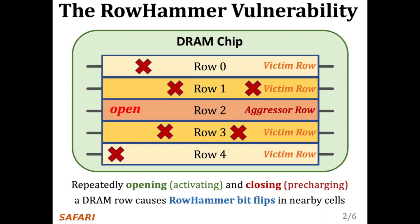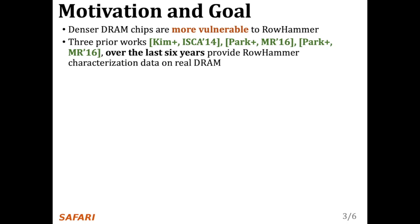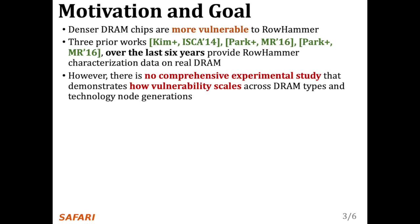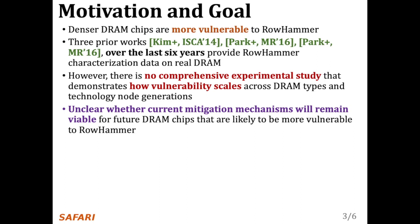Denser DRAM chips are more vulnerable to rowhammer. Three prior works provide rowhammer characterization data on real DRAM chips. However, there is no comprehensive experimental study that demonstrates how the rowhammer vulnerability scales across DRAM types and technology node generations, and as DRAM chips become more dense. Therefore, it is hard to identify whether current mitigation mechanisms will remain viable for future DRAM chips that are likely to be more vulnerable to rowhammer.